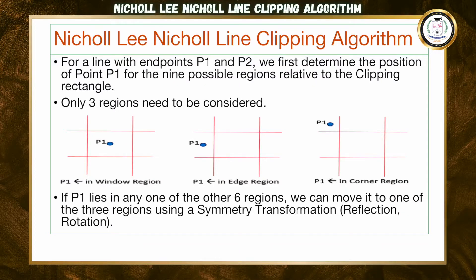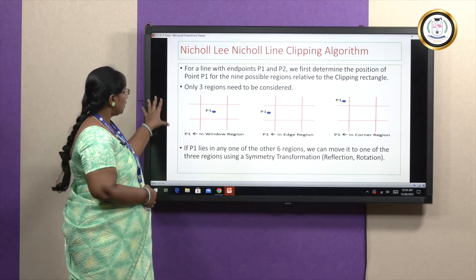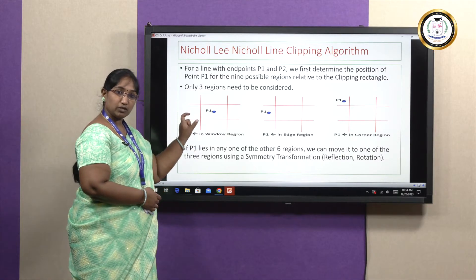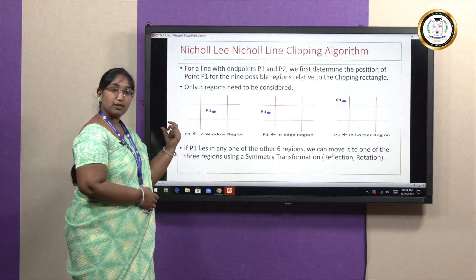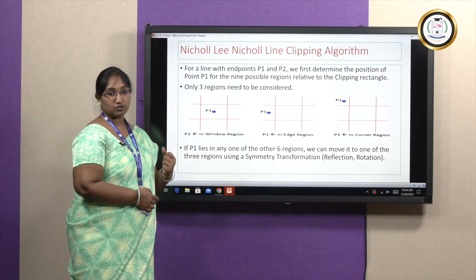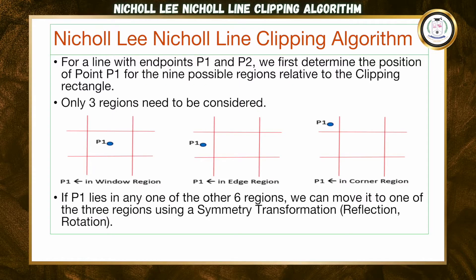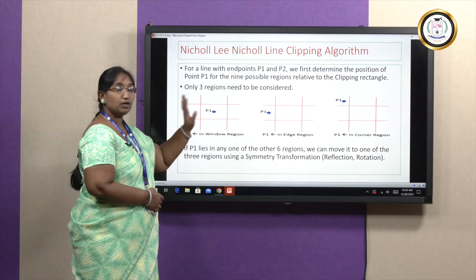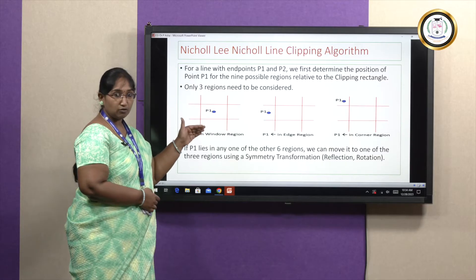In interior clipping, the portions of a line inside the window will be saved and the portion outside the window will be clipped. Any line will have two endpoints — let the starting coordinates be P1 and the ending coordinates be P2. For now, I am considering only P1 and we will find out where P2 will be while working out the algorithm.